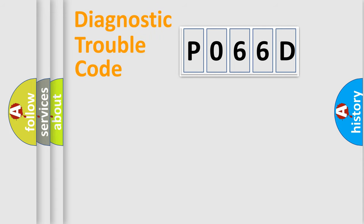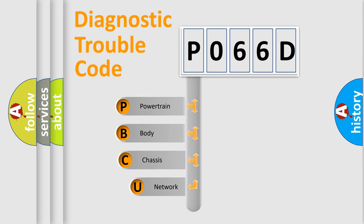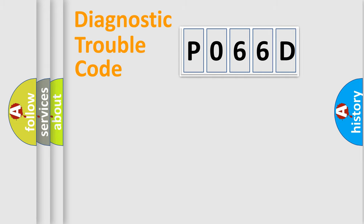Let's do this. First, let's look at the history of diagnostic fault code composition according to the OBD2 protocol, which is unified for all automakers since 2000. We divide the electric system of automobile into four basic units: Powertrain, Body, Chassis, and Network.